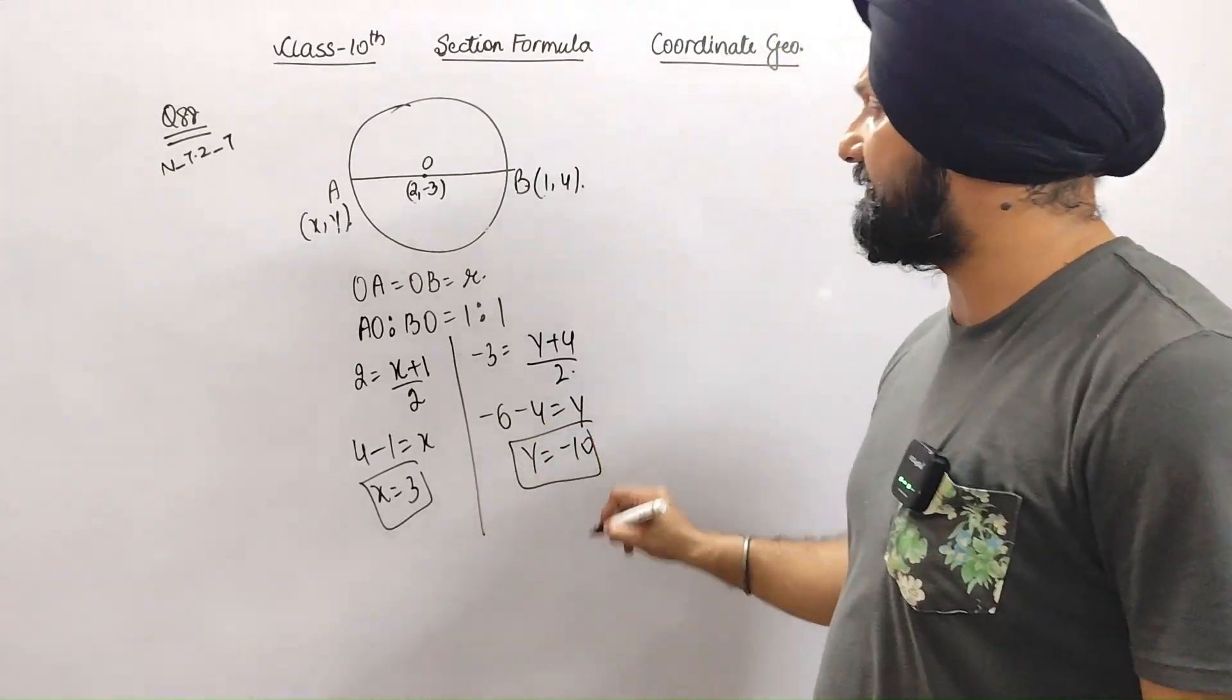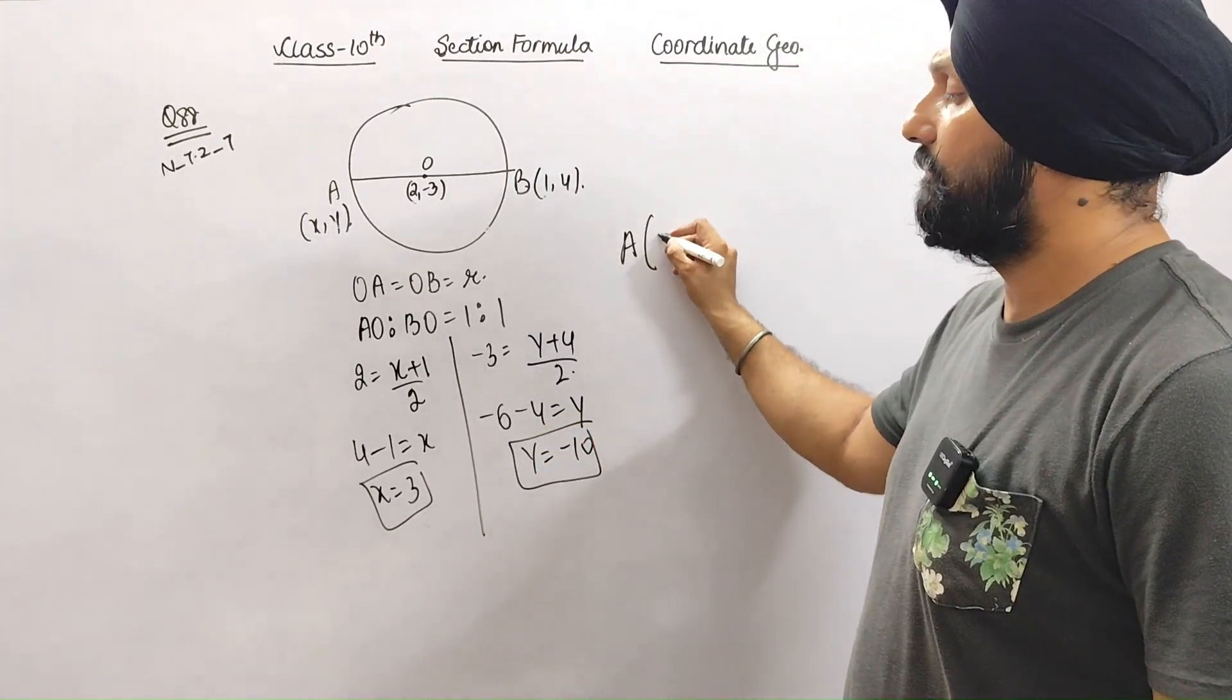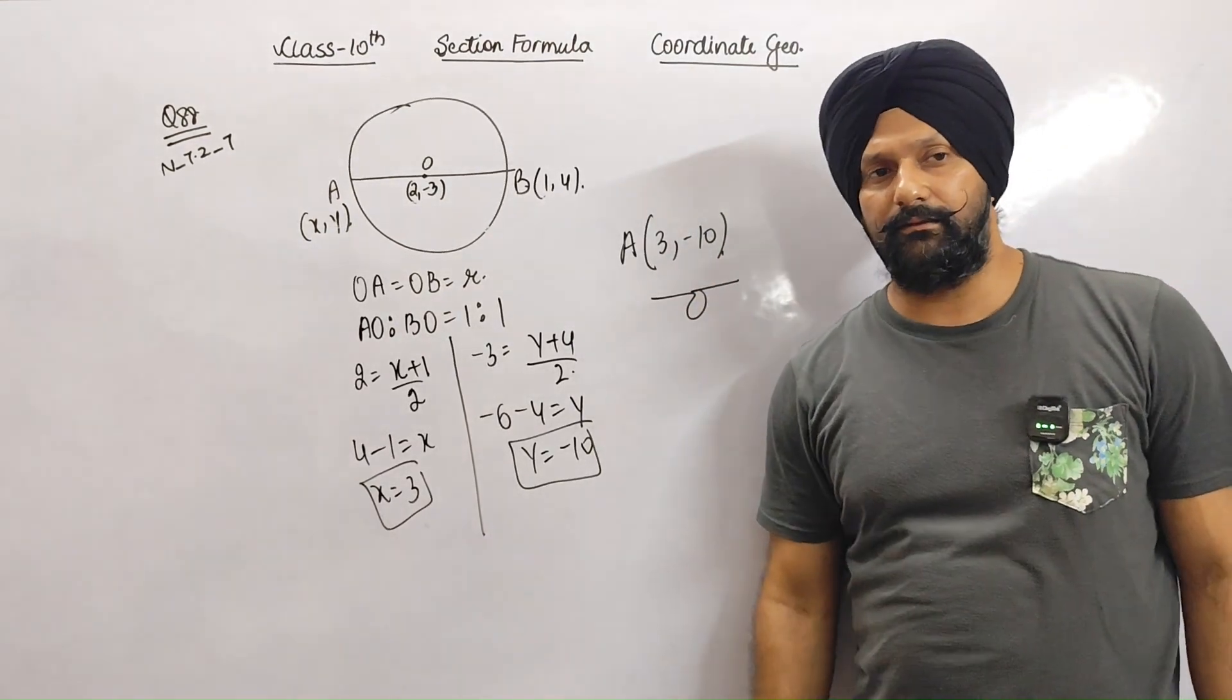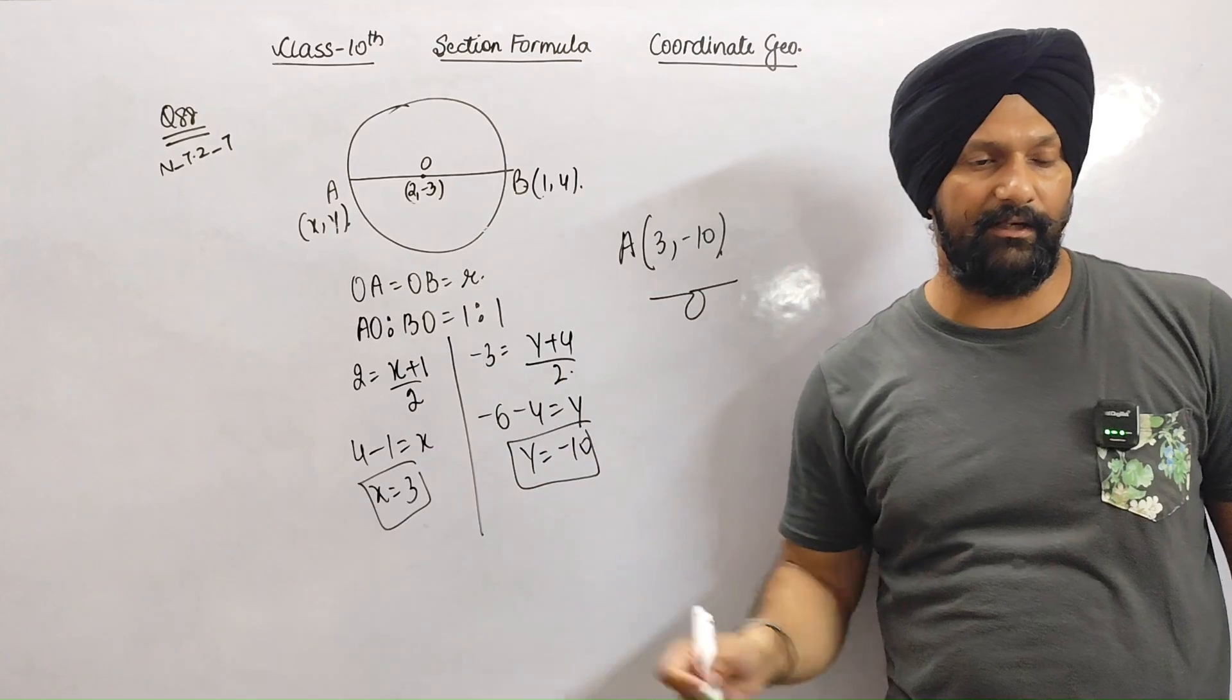So coordinates of A are (3, -10). What have you understood? Is it clear to you? Do a note.